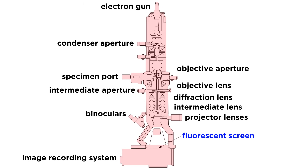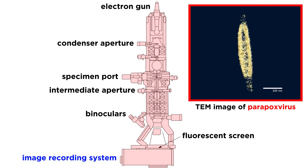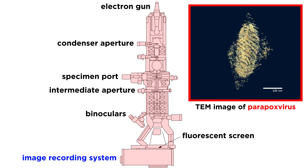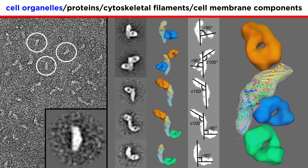This is where we start translating the electrons into an image. The fluorescent screen is coated with a chemical which appears as bright spots when electrons come into contact with it. The intensity of the bright spot depends on how much energy the electrons have when they hit the fluorescent screen. The camera under the fluorescent screen then captures the image made from the bright spots, which is displayed on a computer screen. Transmission electron microscopes are used to visualize structures too small to study with light microscopes, such as cell organelles, proteins, cytoskeletal filaments, and the components of cell membranes.